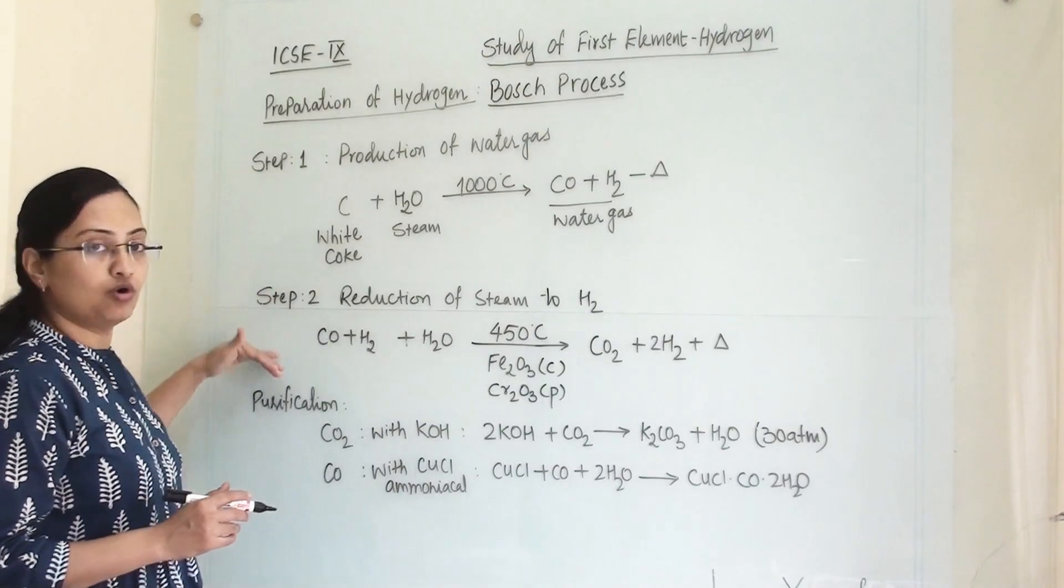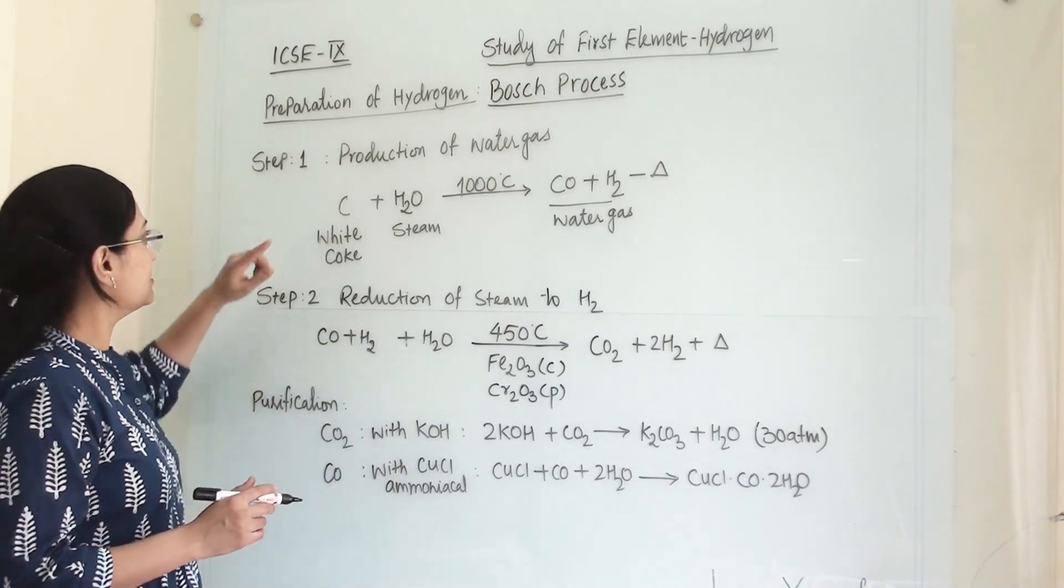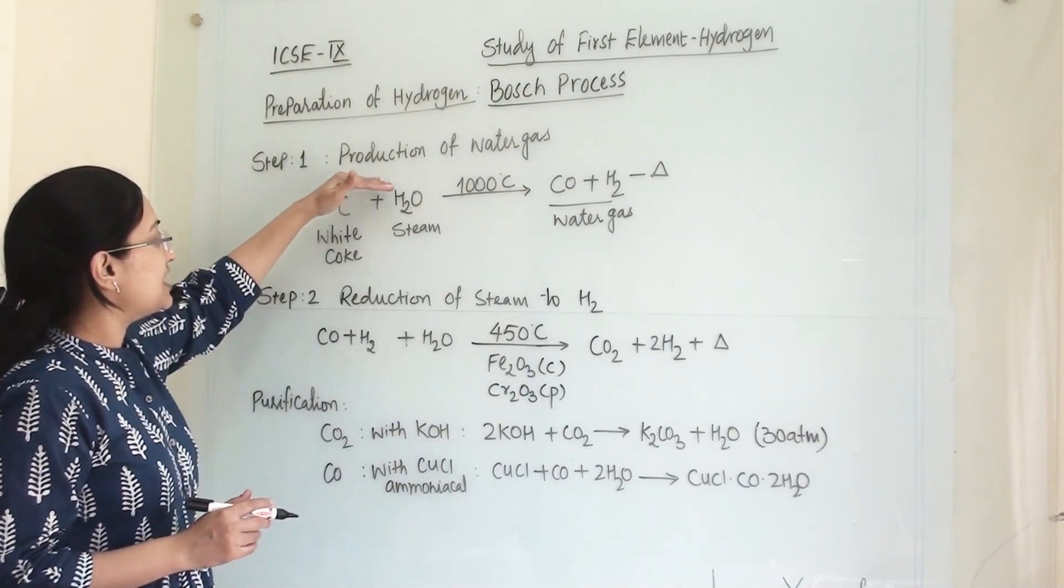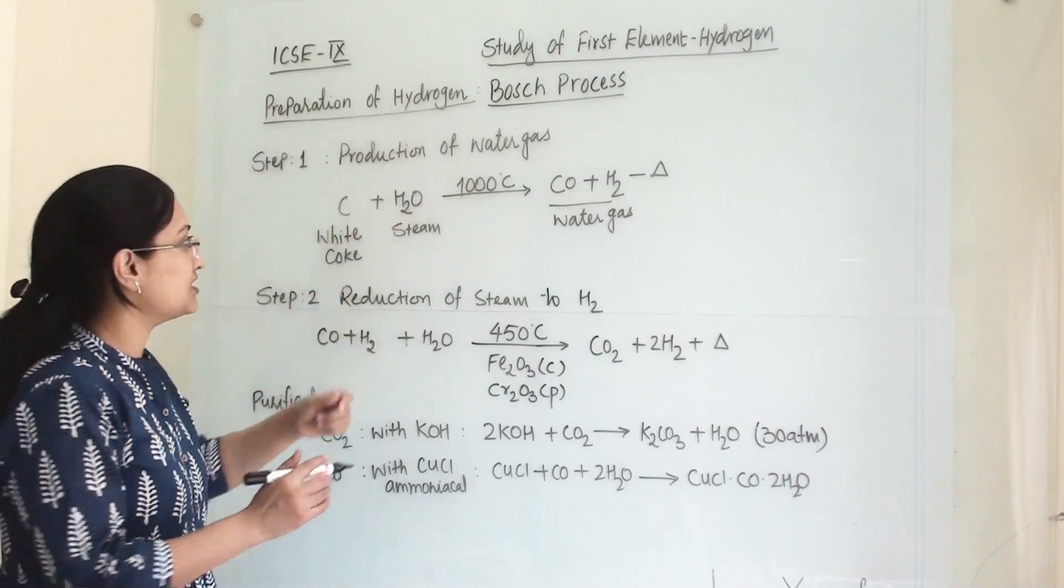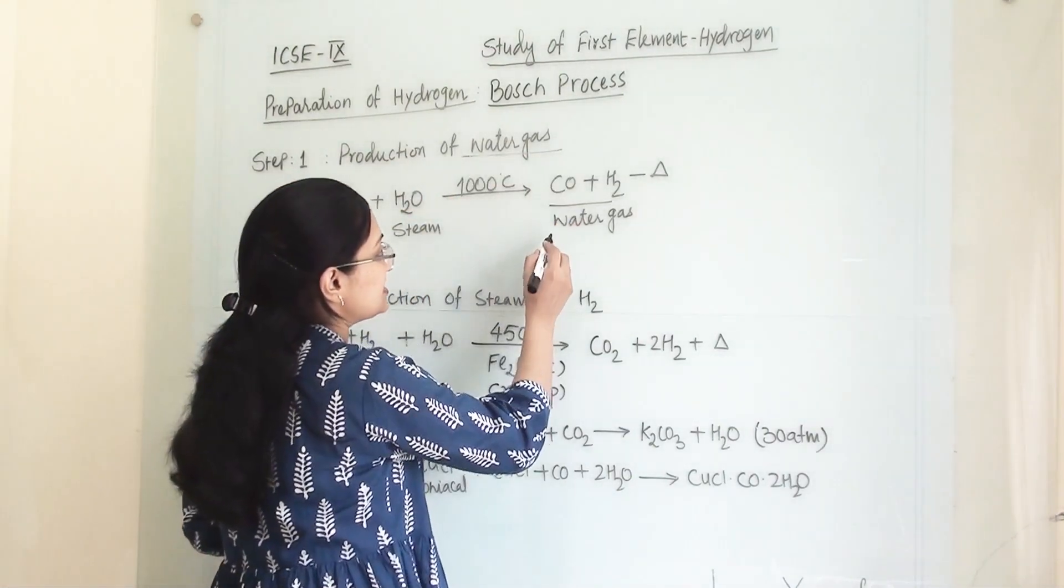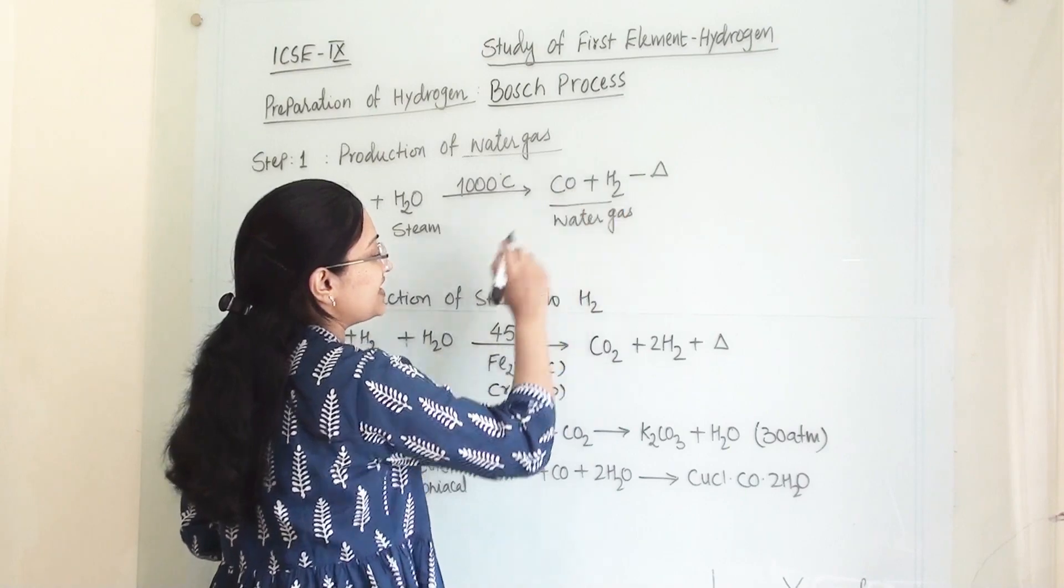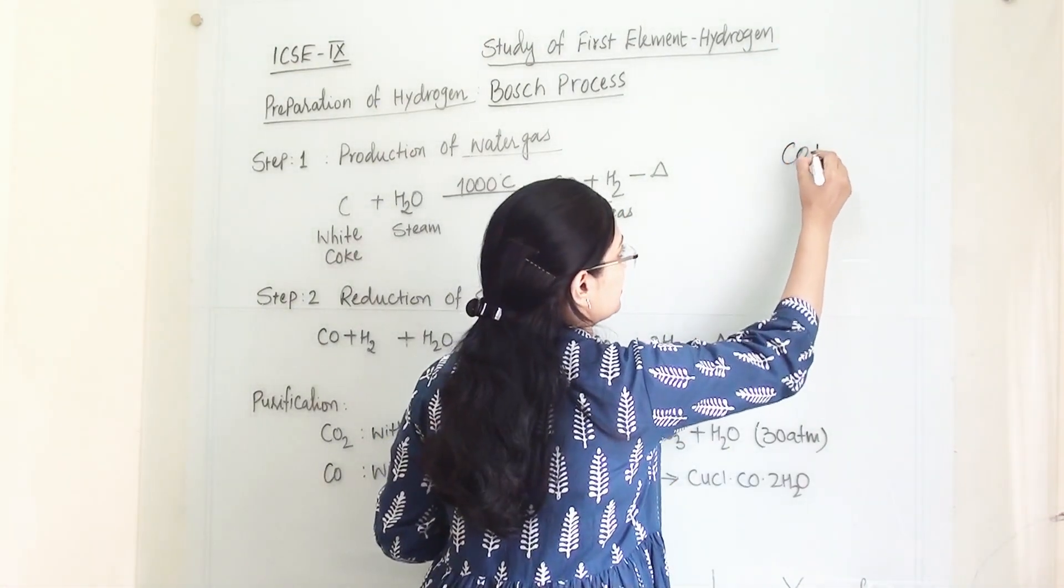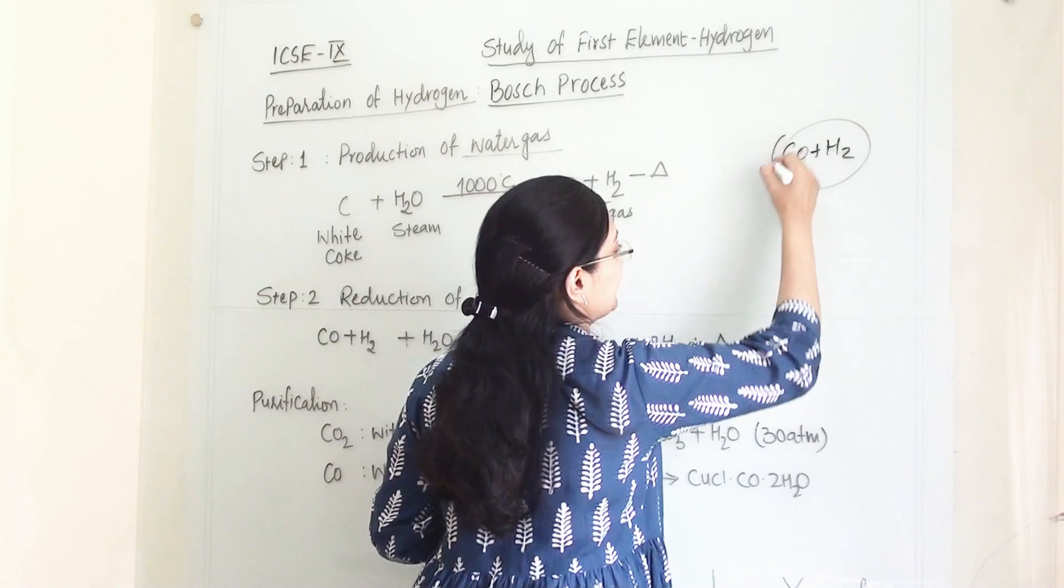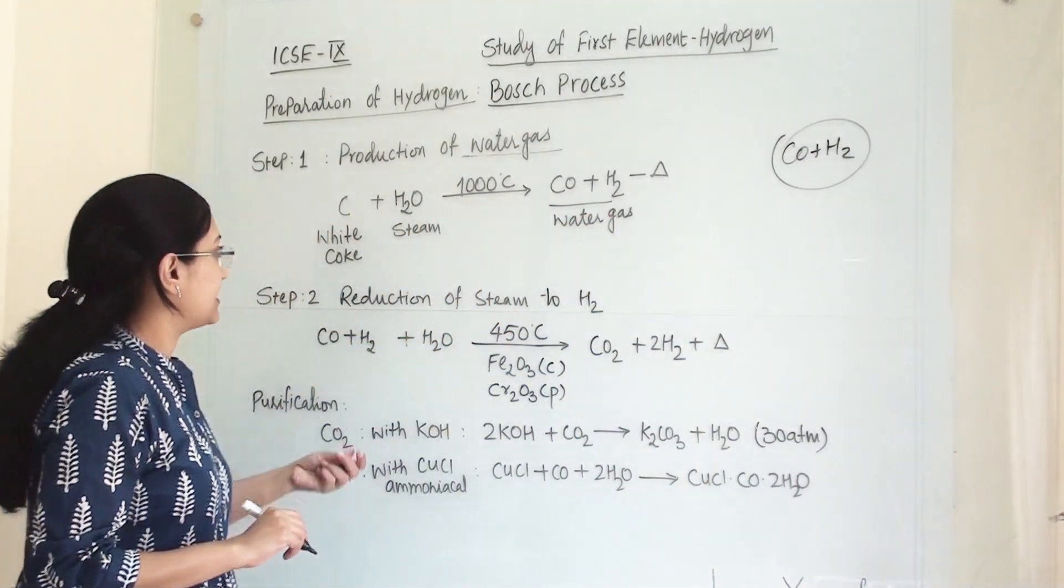This process involves a two-step reaction. In the first step we are producing water gas. Now what is water gas? Water gas is a mixture of carbon monoxide and hydrogen. So this mixture is collectively known as water gas.